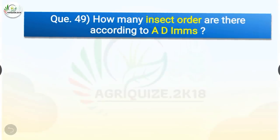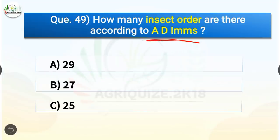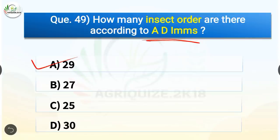Question number 49. How many insect orders are there according to ADMS? The options are 29, 27, 25, or 30. The correct answer is option A, 29. There are 29 insect orders according to ADMS.